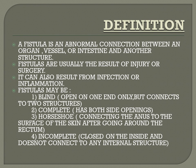The second type is complete, where two structures are connected with openings on both sides. The third is horseshoe, which connects the anus to the surface of the skin after going around the rectum. The fourth is incomplete, which is closed on the inside and does not connect to any internal structure.